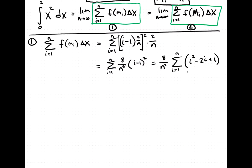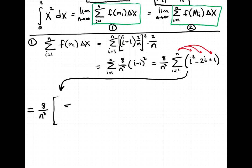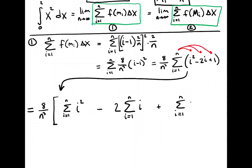Let's bring this down to apply properties of summation. We take the summation term by term, so we have 8/n³ times: the summation from i=1 to n of i², minus 2 times the summation from i=1 to n of i, plus the summation from i=1 to n of 1. We're just splitting up that summation so we can apply known summation formulas.